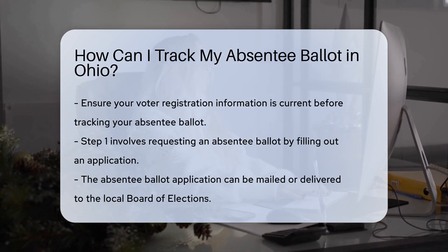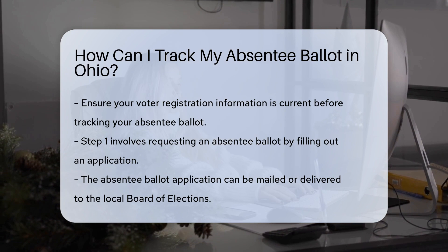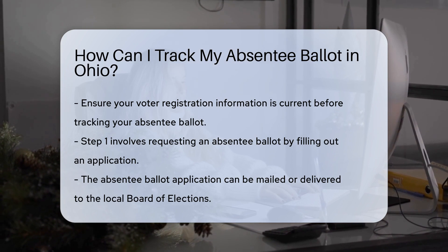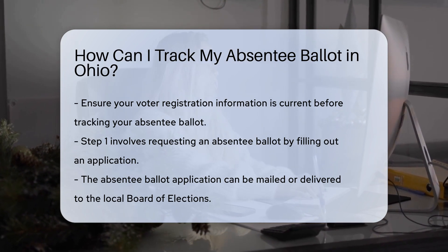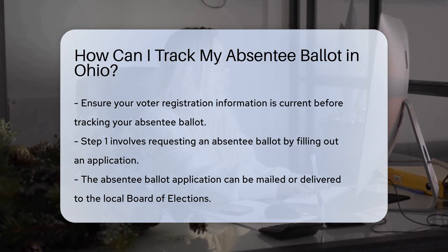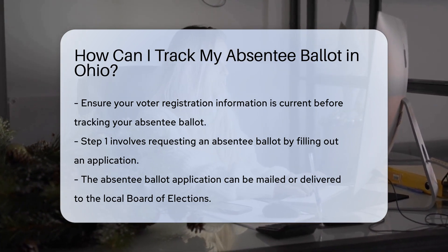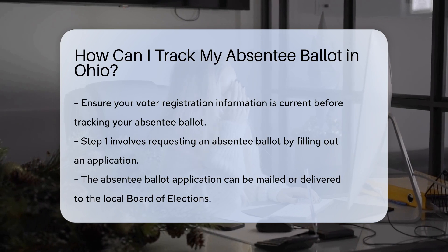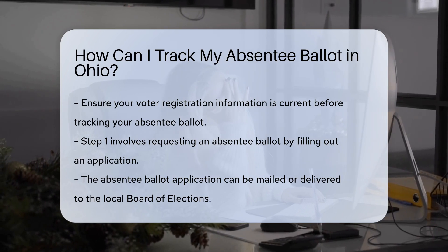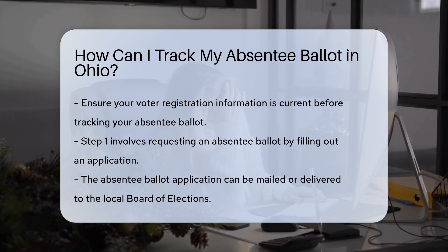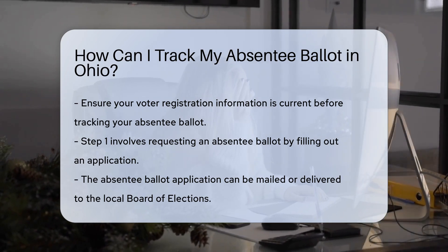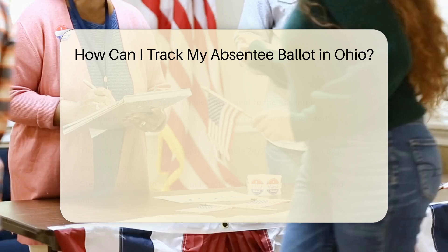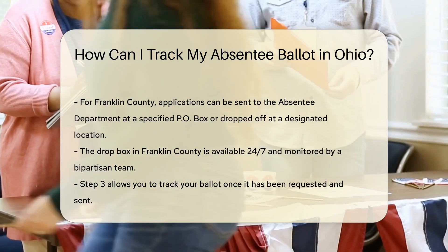Step 1: Request your absentee ballot. If you haven't already, you need to request an absentee ballot. You can do this by filling out an absentee ballot application. The application can be mailed or dropped off at your local Board of Elections office.